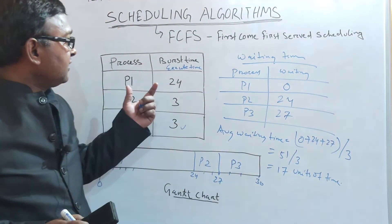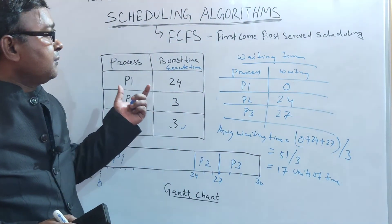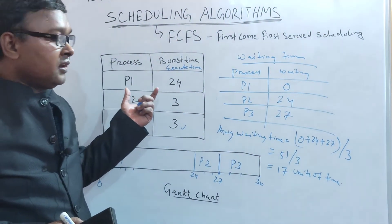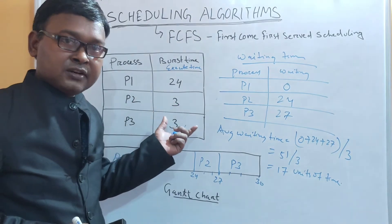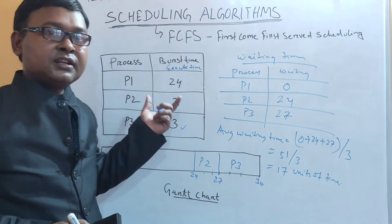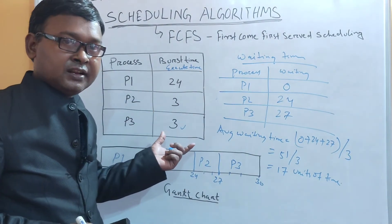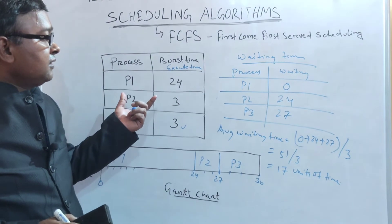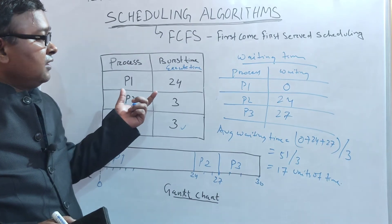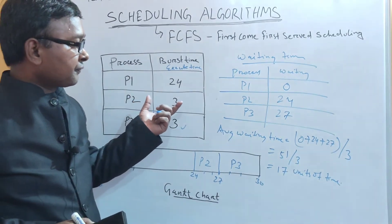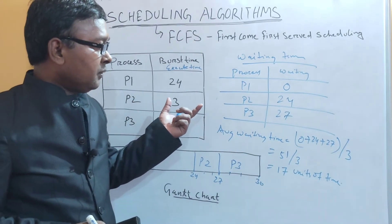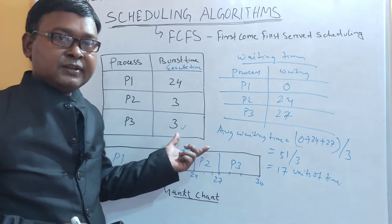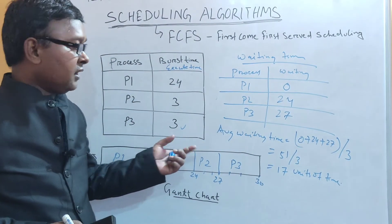What is the average waiting time? It is 0 plus 24 plus 27 divided by 3 processes, which equals 17 units of time. So 17 units of time is the average waiting time for all 3 processes to complete their full execution. This is how the FCFS scheduling algorithm works — it is a non-preemptive scheduling algorithm and is a very beneficial scheduling algorithm.